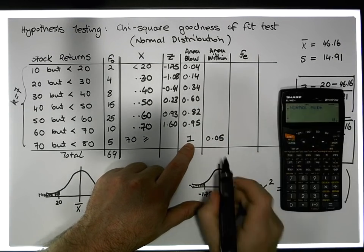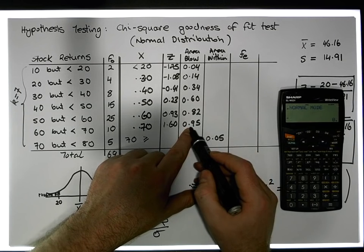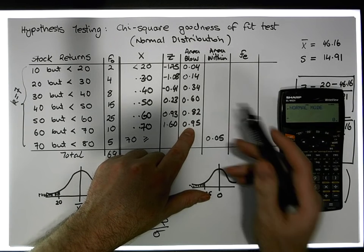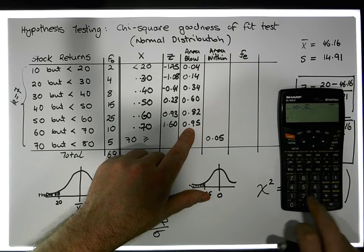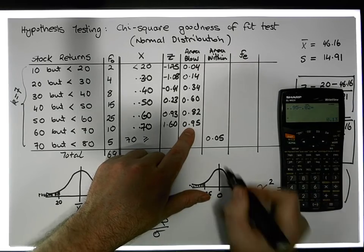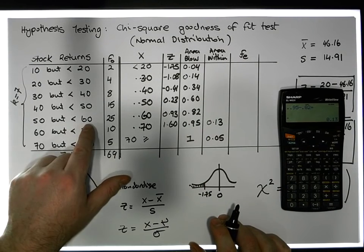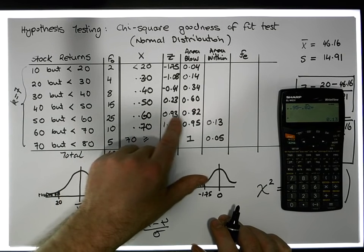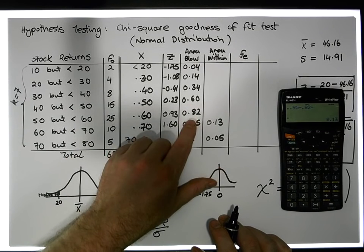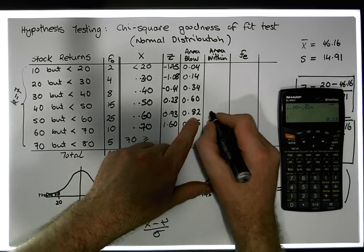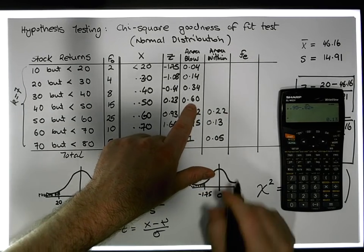The area that's between 60 and 70: the area up to 70 is 0.95, the area up to 60 is 0.82, so the area in here must be 0.95 minus 0.82, which gives us 0.13. The area in the interval from 50 to 60: the area accumulated up to 60 is 0.82, the area accumulated up to 50 is 0.60, so the area in that interval is 0.22. The area inside the next interval is 0.26.